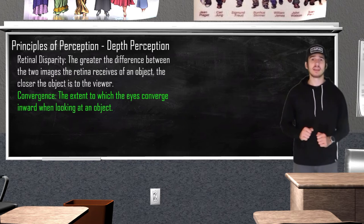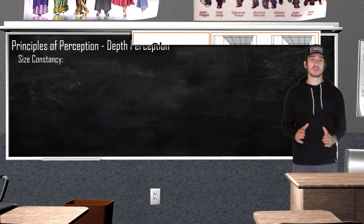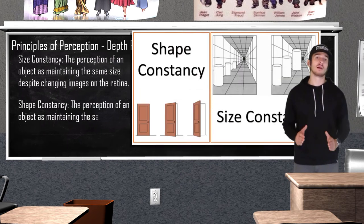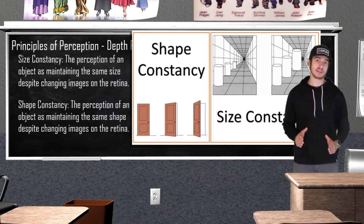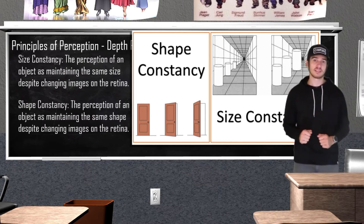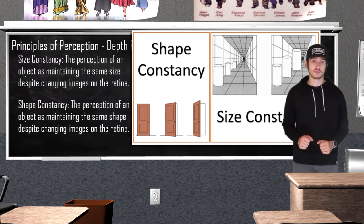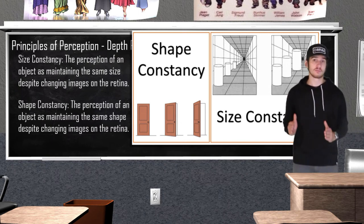Perceptual constancies refer to the idea that objects are constant and unchanging despite changes in their sensory input. Size constancy states that we perceive an object as maintaining the same size despite changing images on the retina. Shape constancy states that we perceive an object as maintaining the same shape despite changing images on the retina.